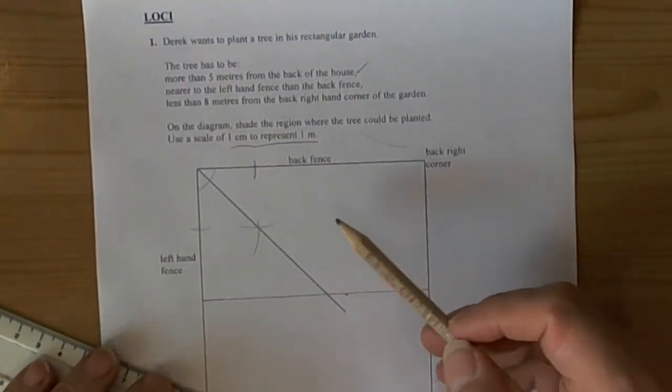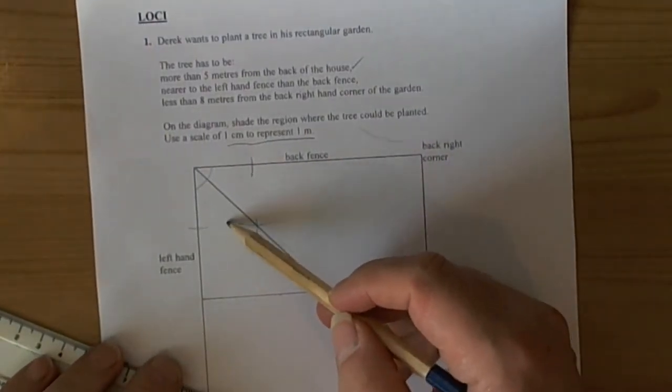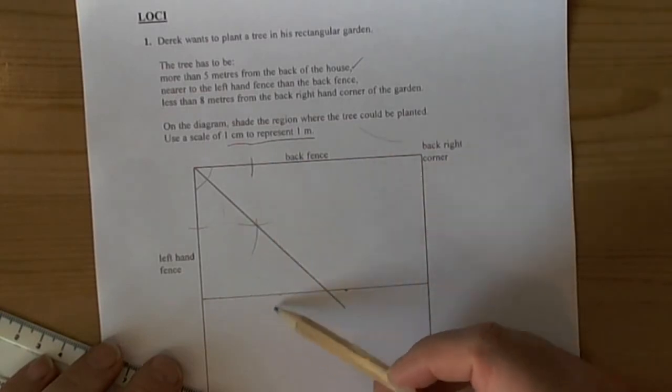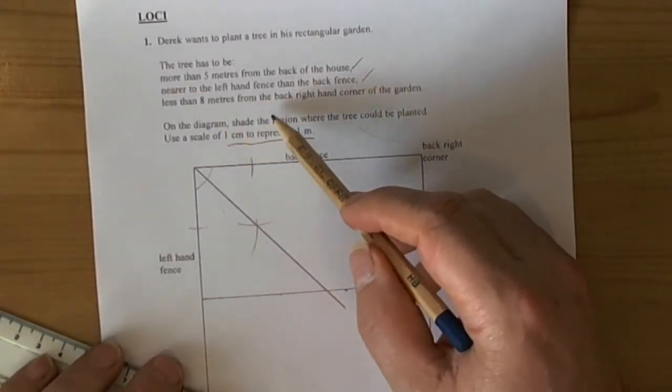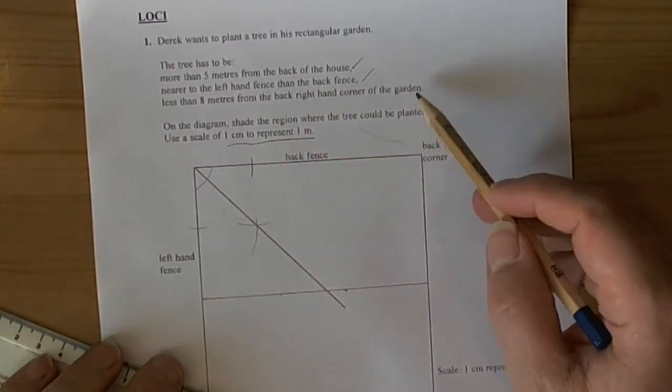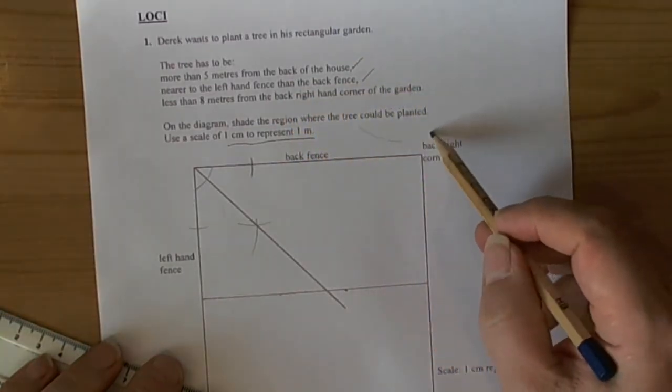So we now know that the tree has to be nearer to the left hand fence, which is over here somewhere. It then has the third condition less than eight metres from the back right hand corner of the garden. So the back right hand corner is over here.